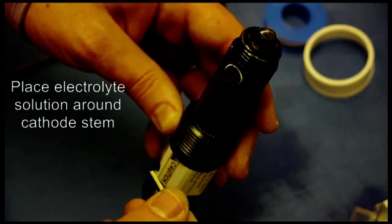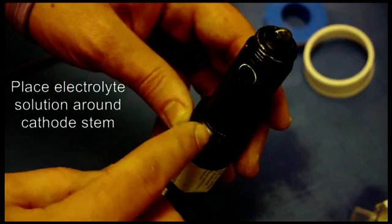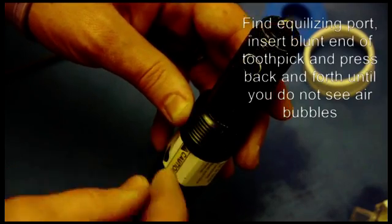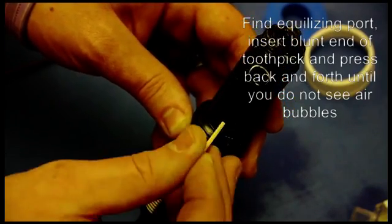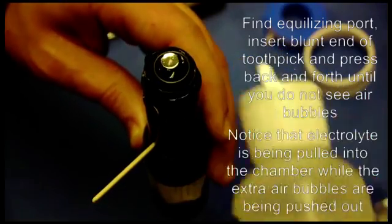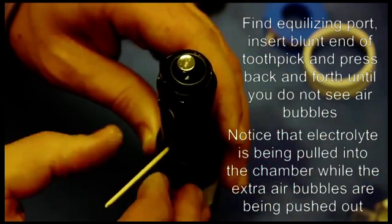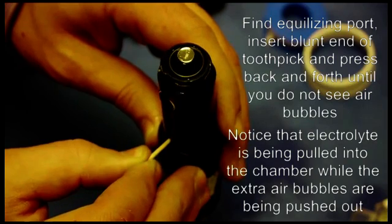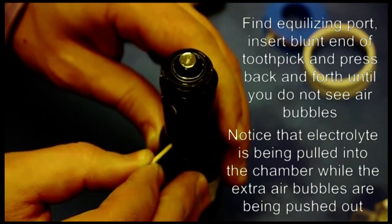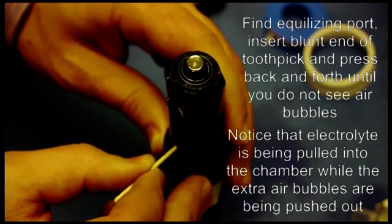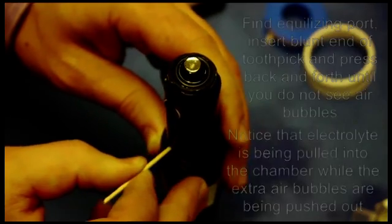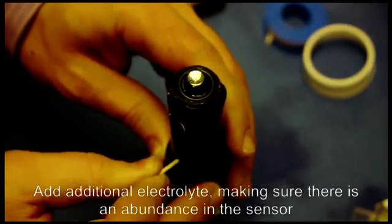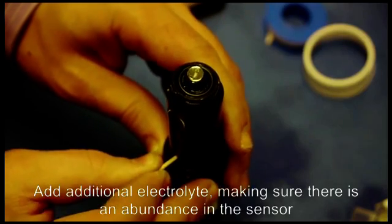Next you're going to want to find the pressure equalizing port which is a small little hole above the threads. Take the flat end of your toothpick and place it inside. Fill the solution on top of the cathode and then press in to the equalizing port and see how I'm pushing the air out and it's getting replaced with the electrolyte solution. That's what we want. I'm going to do this several times until no more solution is left.